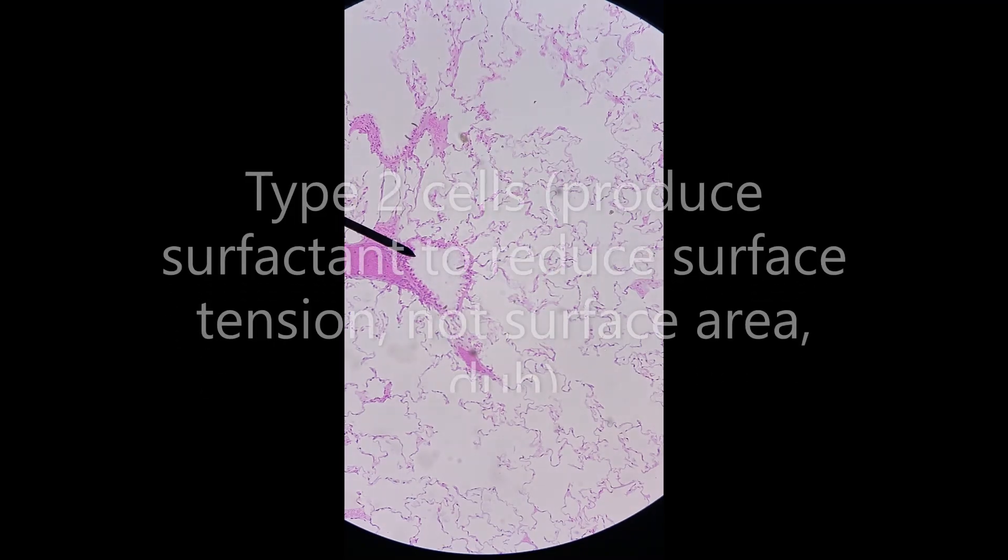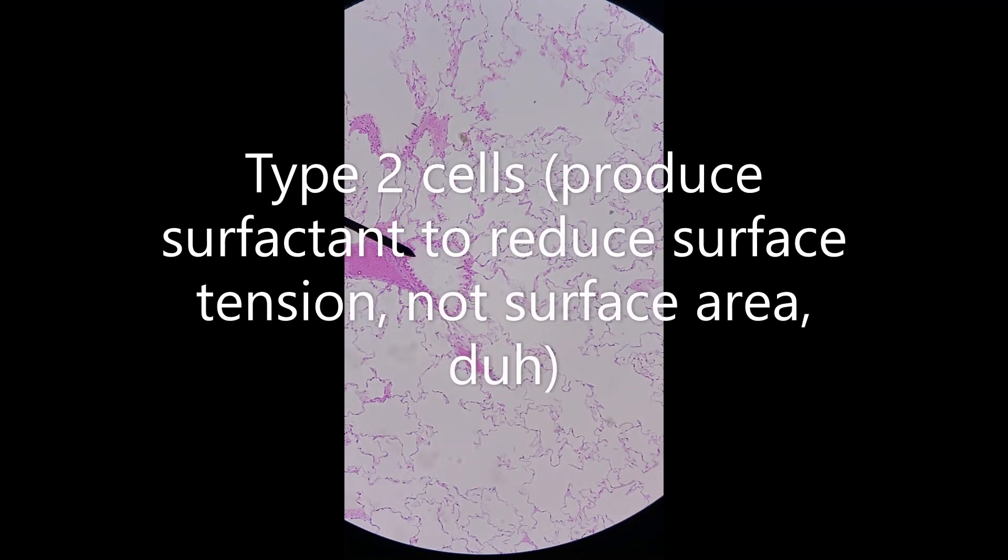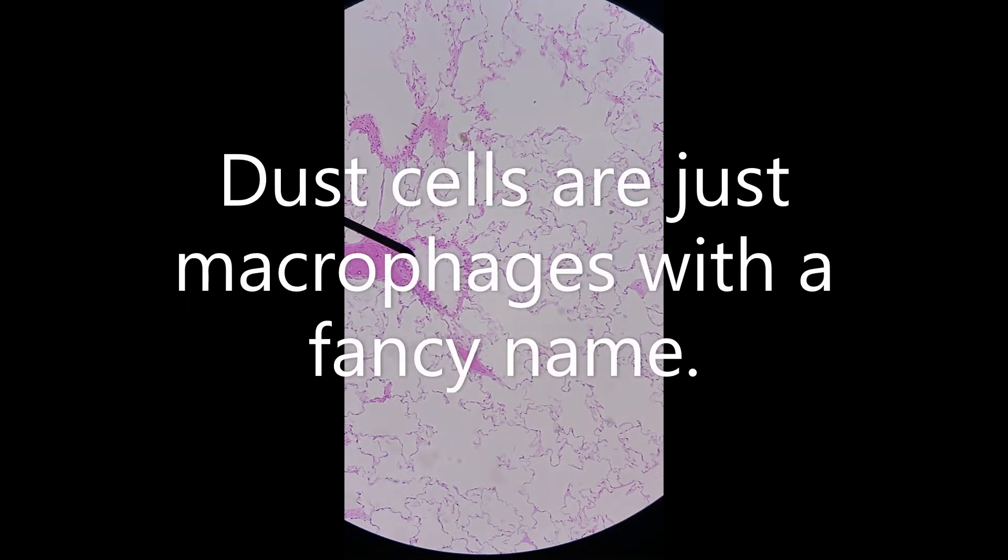And then it tells you to be able to identify type 2 cells. You can't see those in here. Type 2 cells are the ones that produce surfactant, which reduces surface area. And dust cells or macrophages are just cells that wander around scarfing up things that you've inhaled. And that's it for this slide.